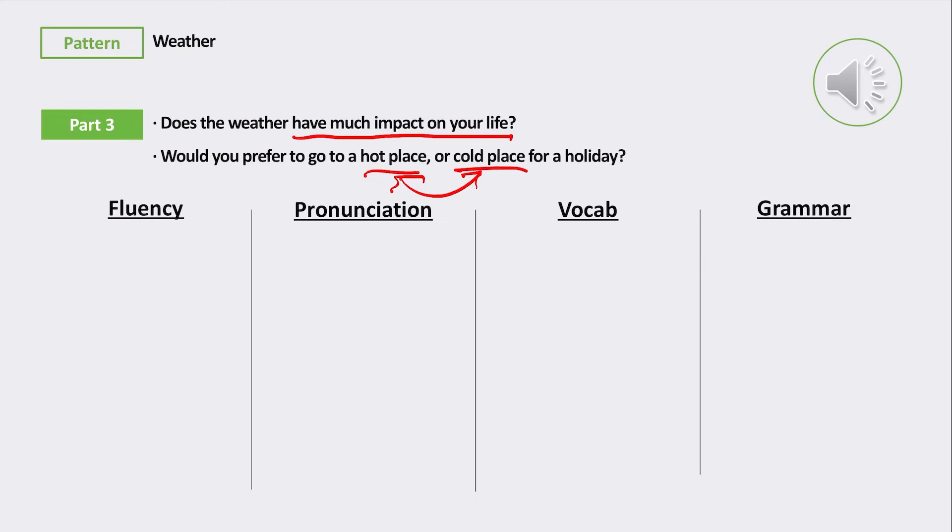The weather doesn't influence my life at all because I don't work outside, I always work inside the building. And also I like all kinds of weather. I think each weather has different charm. For example, if it is rainy I like the sound of raindrops hitting on the window, and if it is sunny I like the sunlight while I'm walking on the street.